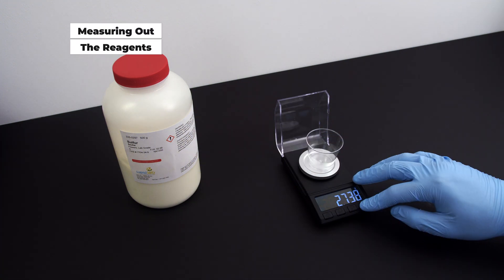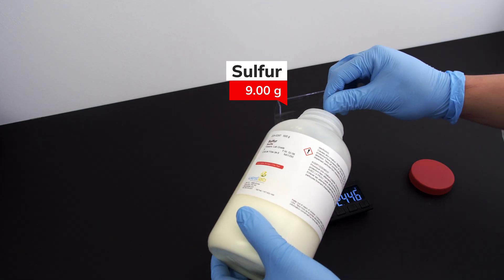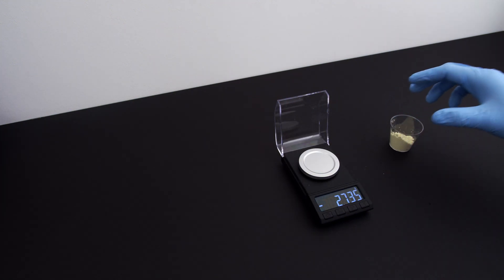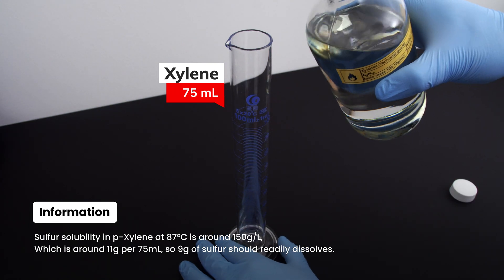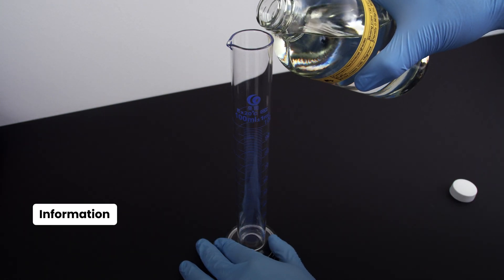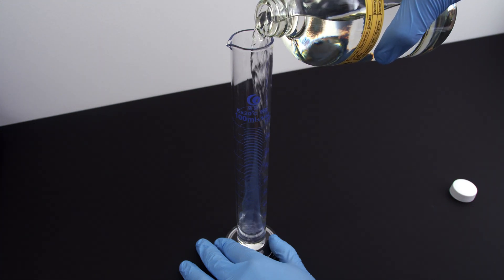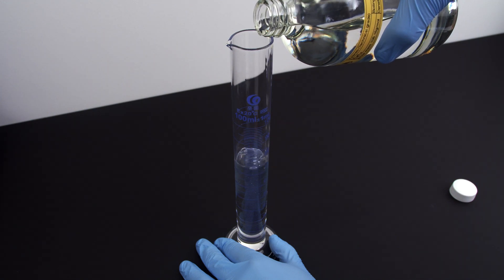Without further ado, let's get started. To begin the experiment, 9 grams of sulfur powder is measured out, followed by 75 ml of xylene. This amount corresponds to the solubility of p-xylene at 87 degrees Celsius, which is the lowest solubility for sulfur among all xylene isomers. I will be using higher than 87 degrees Celsius to dissolve sulfur, so all sulfur will readily dissolve.